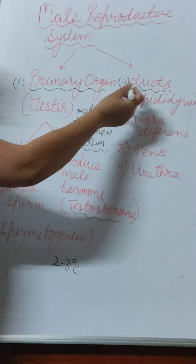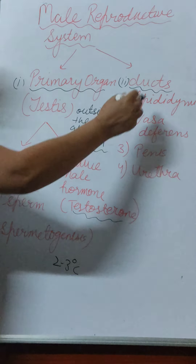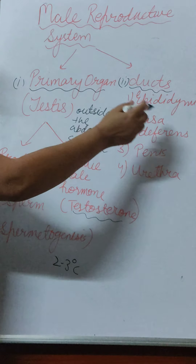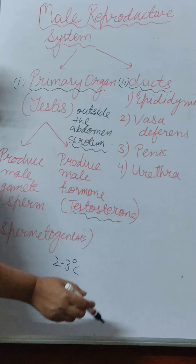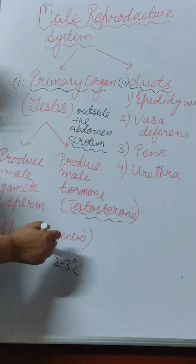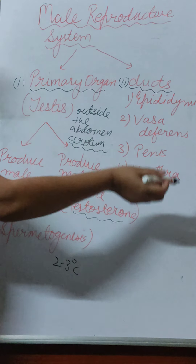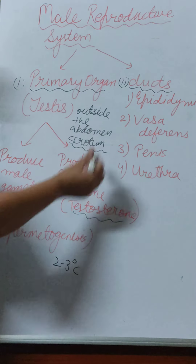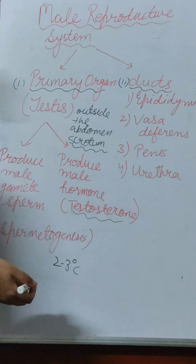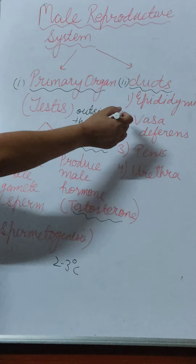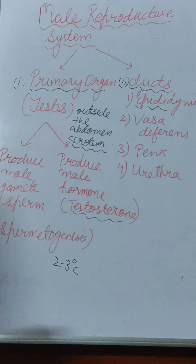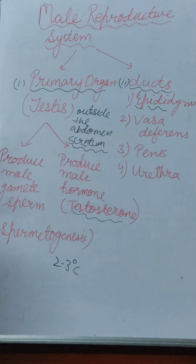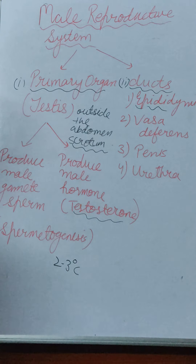The next part is the ducts, which include the epididymis, vas deferens, urethra, and penis. In general, these ducts store the sperm or transfer the sperm from the testes to the outside. The first duct is the epididymis — its main function is to store the sperm, and here the sperm become mature and gain motility, meaning they start moving.